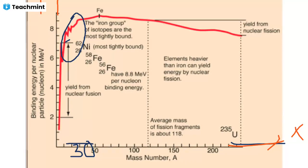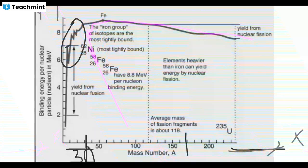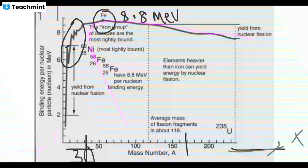For nuclei having mass number in the range of 30 to 170, the binding energy per nucleon is nearly constant — almost a flat region in the curve. Iron has a binding energy per nucleon of 8.8 MeV, which is the maximum value. Therefore, iron is the most stable nucleus in nature.